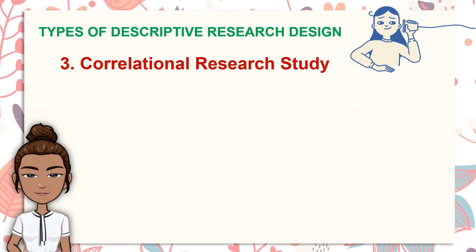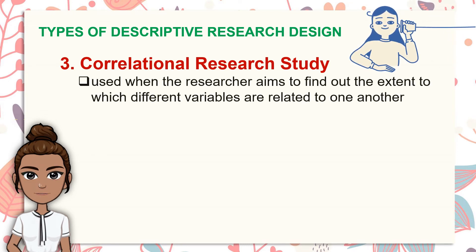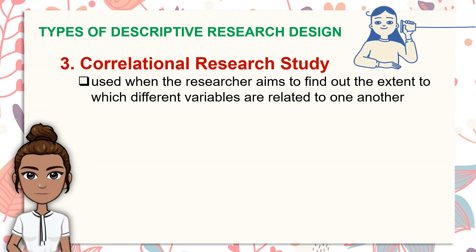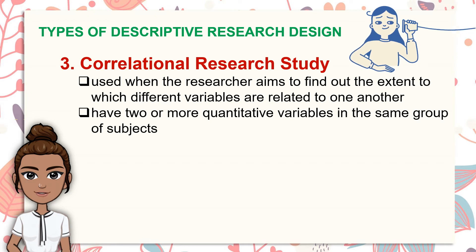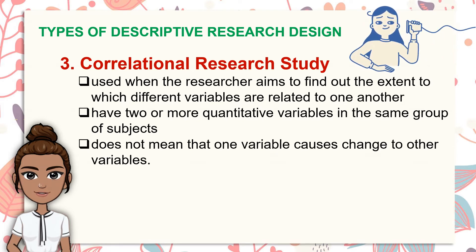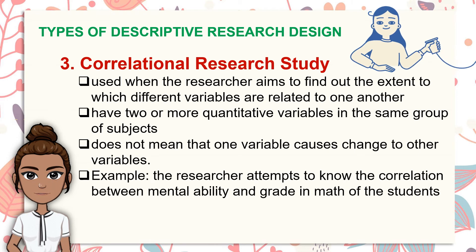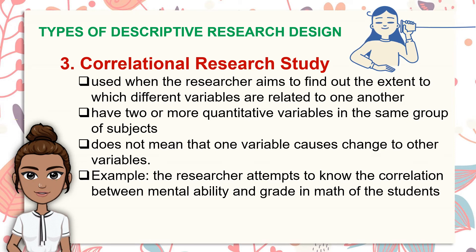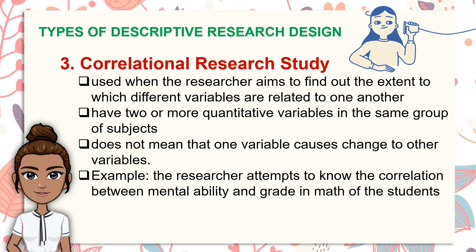Third is a correlational research study. This research design is used when the researcher aims to find out the extent to which different variables are related to one another. In this design, you will have two or more quantitative variables in the same group of subjects. Correlational does not mean causation — it does not mean that one variable causes change in other variables. For example, the researcher attempts to know the correlation between mental ability and grade in math, or the relationship between gender and math performance of students.